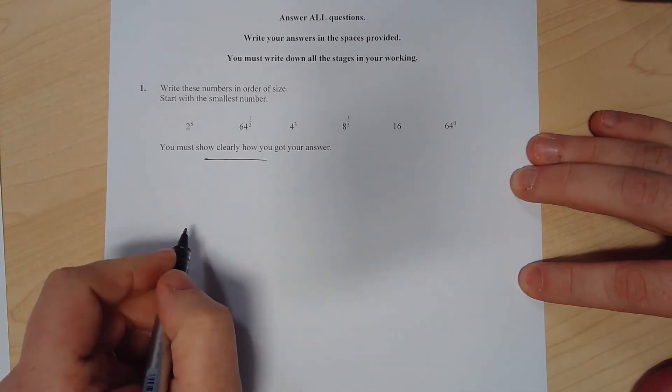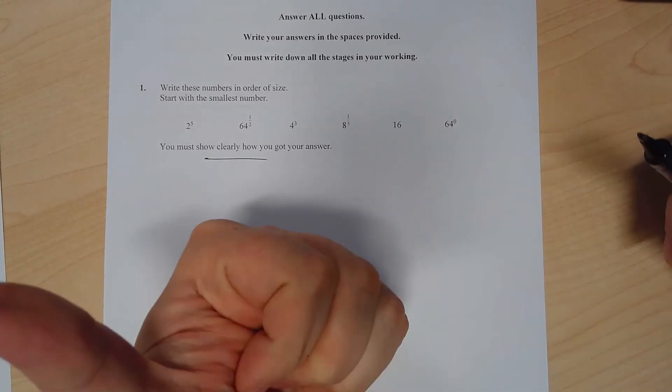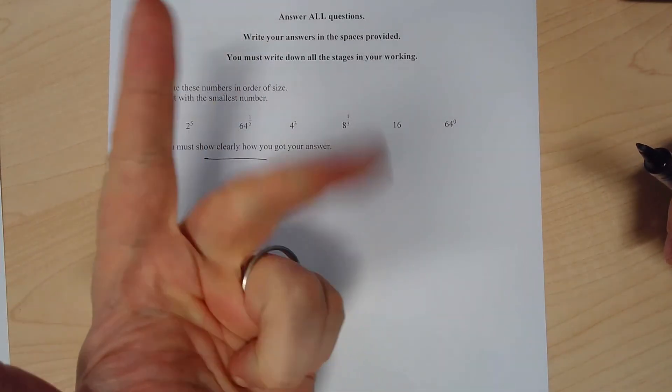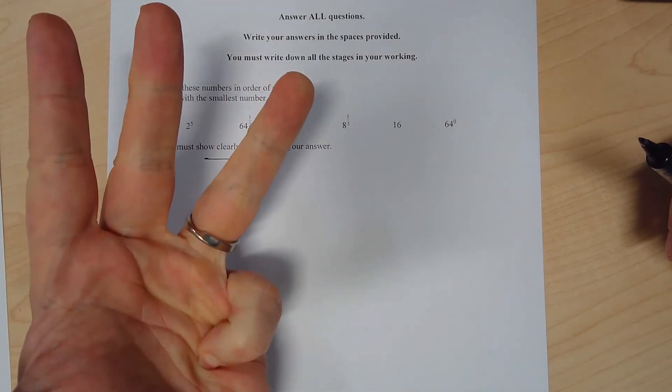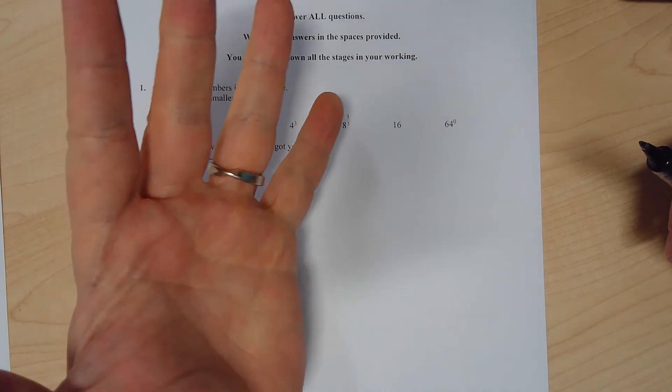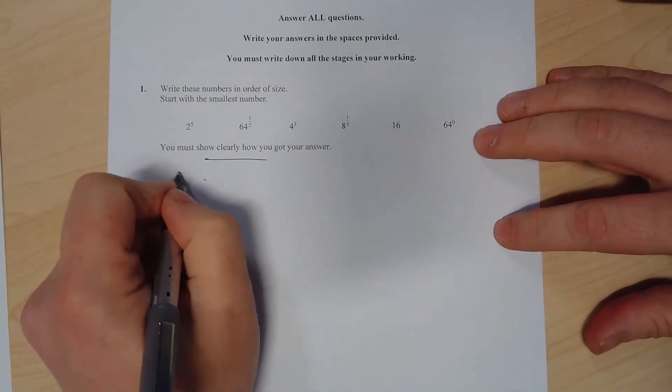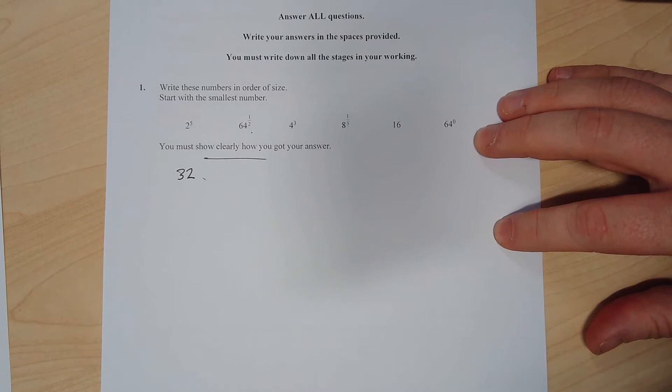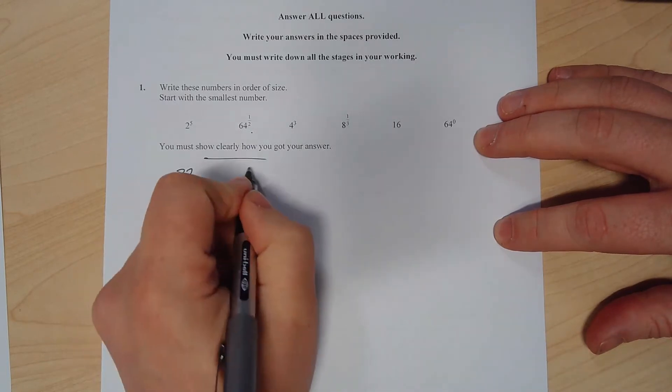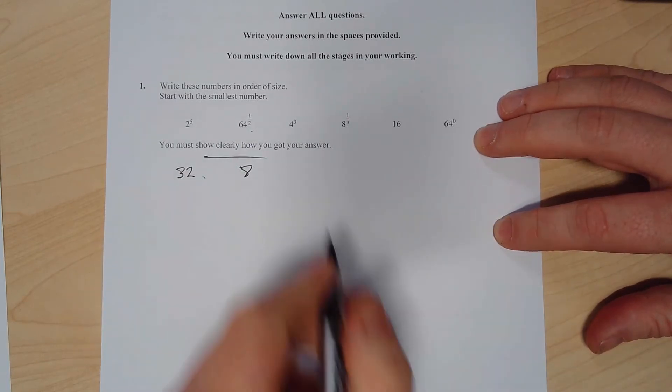So 2 to the power of 5: 2 times 2 is 4, times 2 is 8, times 2 is 16, times 2 is 32. So 2^5 is 32. 64 to the power of a half - power of a half means the square root, so that value is 8. 4 to the power 3: 4 times 4 is 16, 16 times 4 is 64.